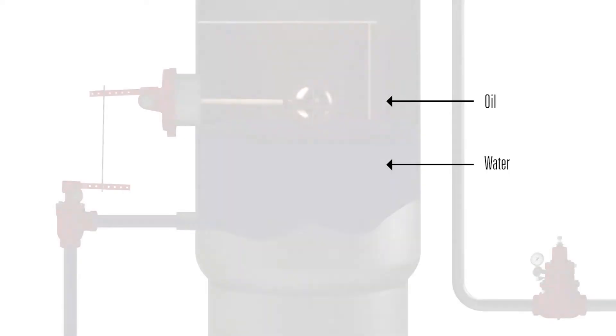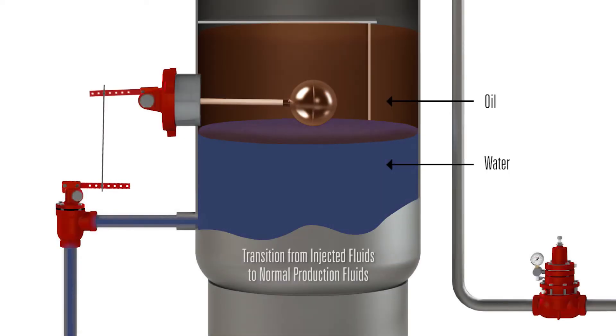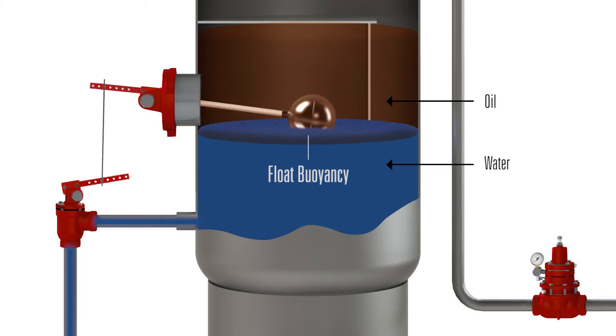The chemistry of a fracked well's production can change rapidly when it transitions from injected fluids to normal production fluid. One of the challenges this brings is maintaining the correct float buoyancy inside the separator.